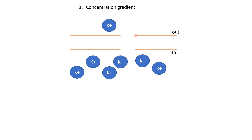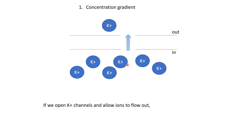If we open an ion channel that allows potassium ions to move, these ions would move out. We can actually calculate how much energy will be released as potassium ions move out. Because these ions are moving along their concentration gradient, moving out would be an energetically favorable reaction, so energy should be released. The amount of energy released will depend on the ratio of potassium ion concentration inside to the concentration outside.